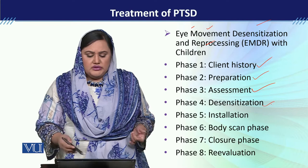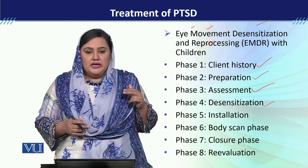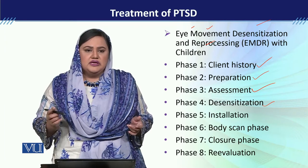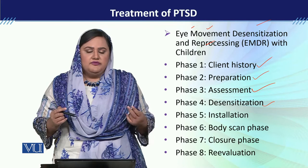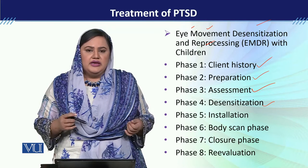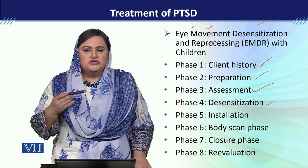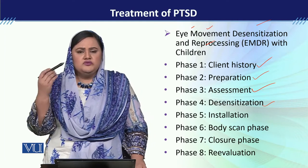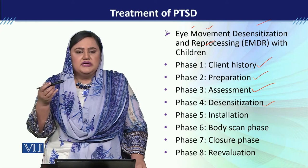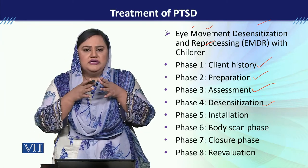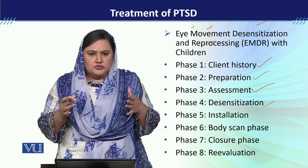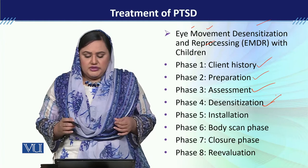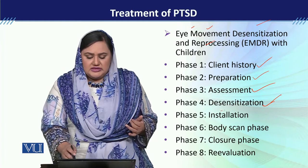Then we do phase four: desensitization. In this phase, we give the client bilateral stimulation — we move our fingers left to right in front of them. During this time, we ask the client to recall the disturbing memory. As they recall it, the anxiety associated with that memory gradually goes away. So the desensitization process happens in phase four.